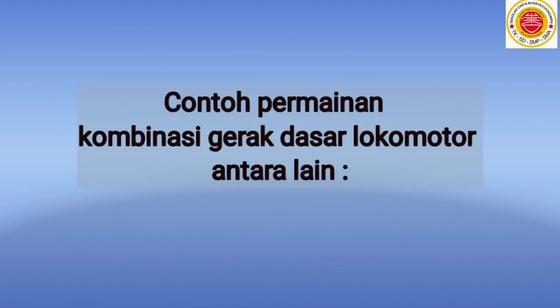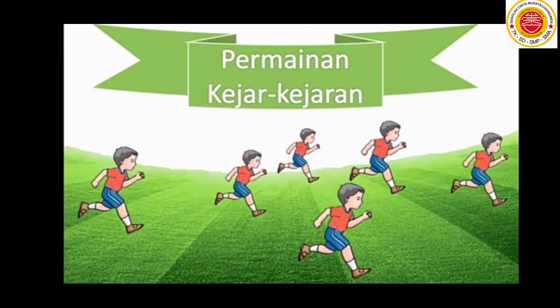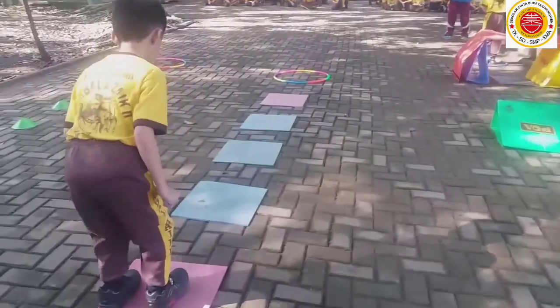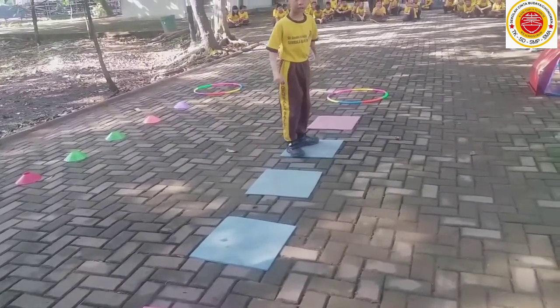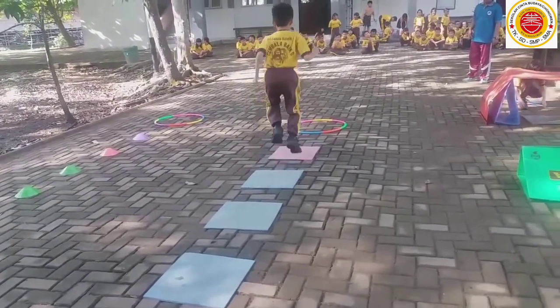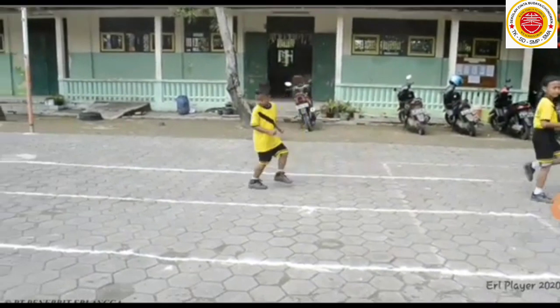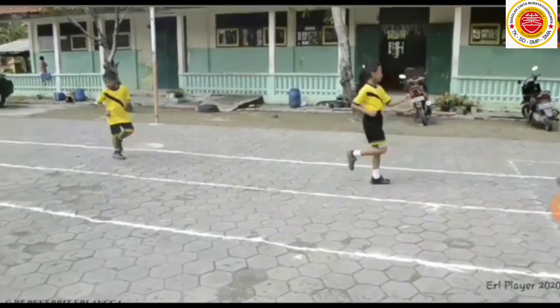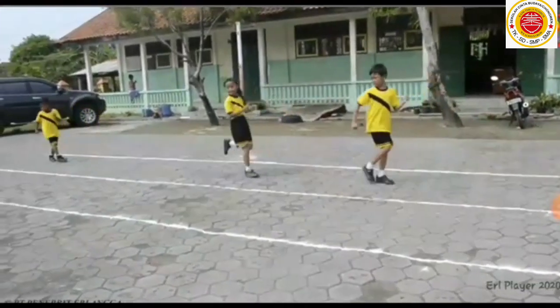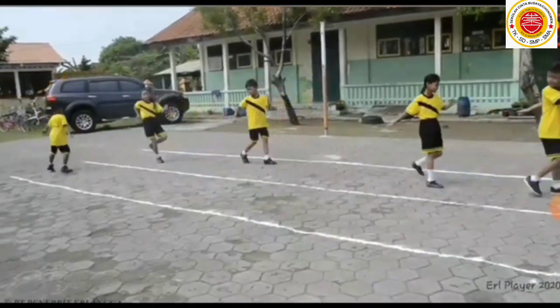Nah anak-anak, contoh permainan kombinasi gerak dasar lokomotor antara lain: yang pertama adalah permainan kejar-kejaran. Permainan kejar-kejaran adalah permainan yang mengharuskan pemain untuk berlari agar tidak tertangkap oleh pengejarnya. Yang kedua, melompat rintangan — permainan ini memerlukan kelincahan dari gerak kaki. Dan yang ketiga, berjalan mundur dan berlari menyamping. Anak-anak dapat berlatih permainan ini di rumah masing-masing, cukup mudah bukan?